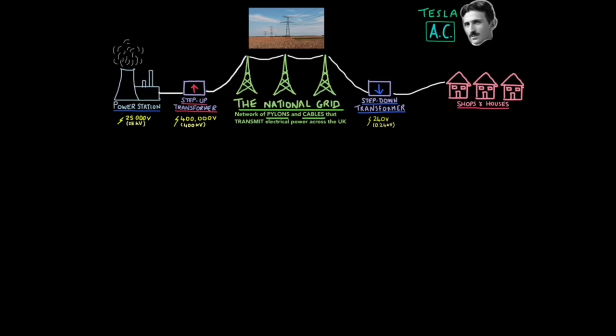Undoubtedly, one of the most important things AC allowed us to do was use transformers. This meant that we did not need to set up power stations every one or two kilometers.